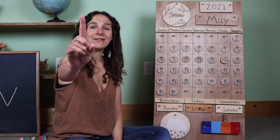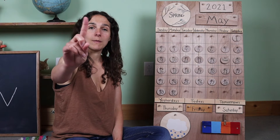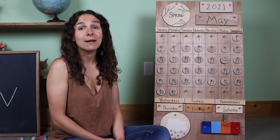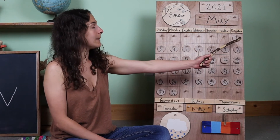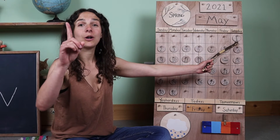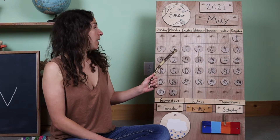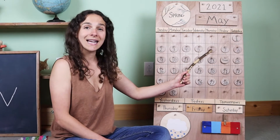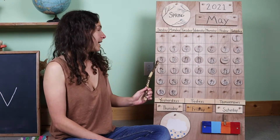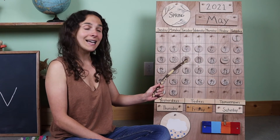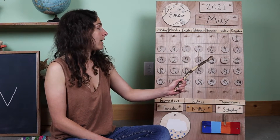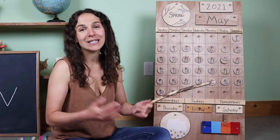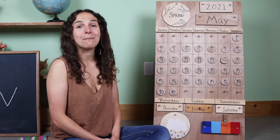Friends, get our counting fingers ready and warm them up to give them a little stretch. Let's count all of the days that we've had so far in the month of May. One, two, three, four, five, six, seven, eight, nine, ten, eleven, twelve, thirteen, fourteen. We have had 14 days so far in the month of May.